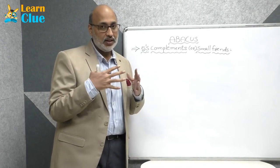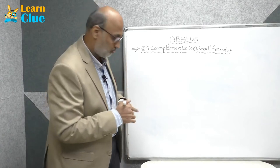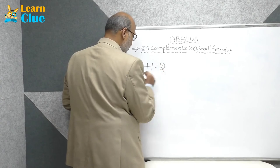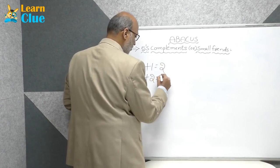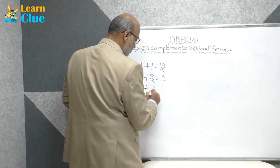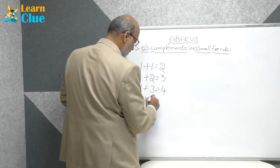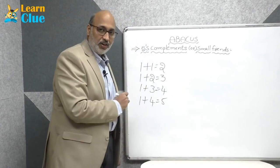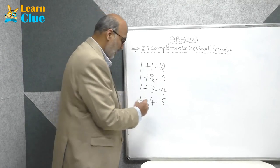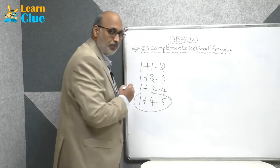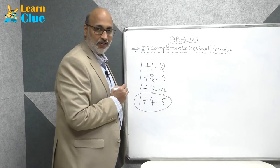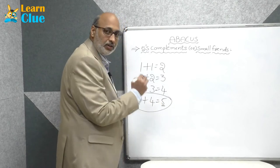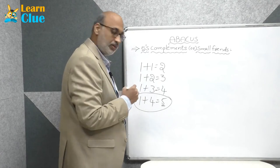Let's see what numbers have a correct match to five. One plus one is two, one plus two is three, one plus three is four, one plus four is five. Which one is the perfect combination? This is the perfect complement to five — one and four are the perfect complements of five.